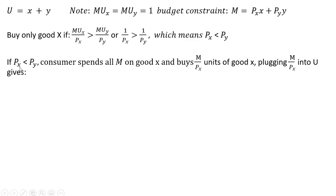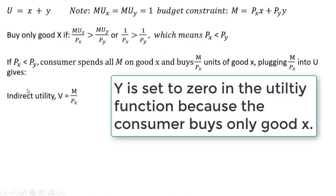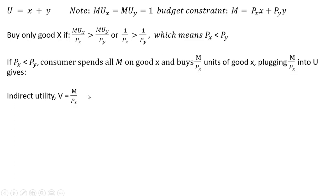So to recap: if the price of good x is less than the price of good y, the consumer spends all his or her money on good x and will be able to afford m divided by the price of good x units of good x. We're going to plug this m divided by the price of good x into the utility function, and this gives us indirect utility. Replacing x with m divided by the price of good x — that's how many units the consumer can afford — we have the following result.